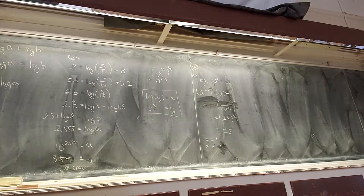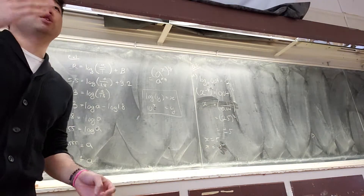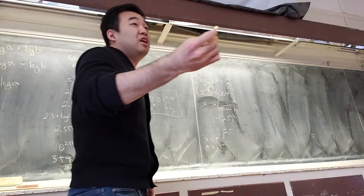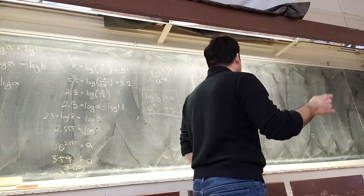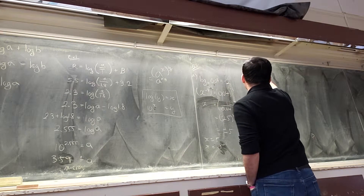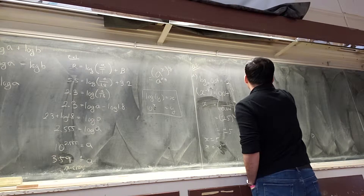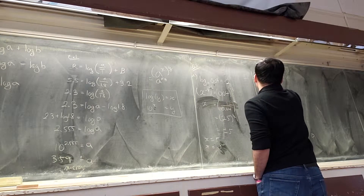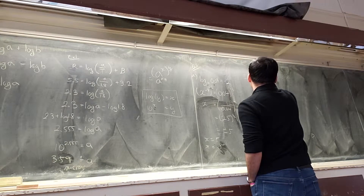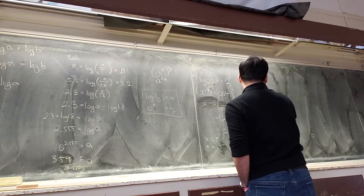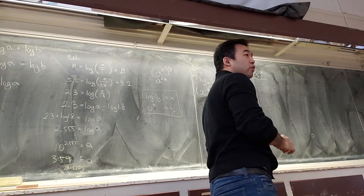Why is it wrong for a logarithm or even an exponential function to have a negative base? Let's keep it simple — use negative 5 as our base. x could be 0, 1, 2, 3, 4, and so on.